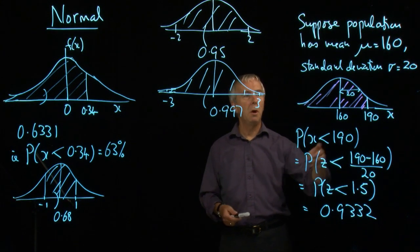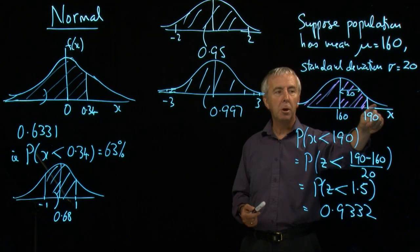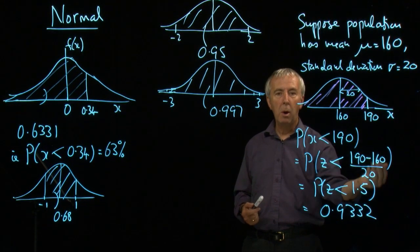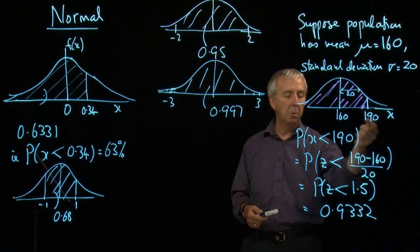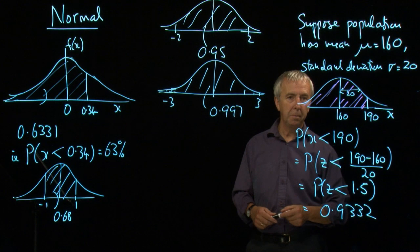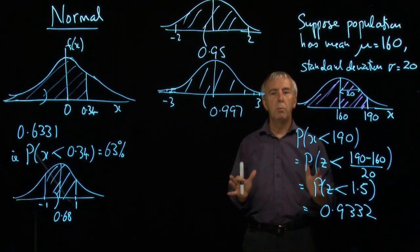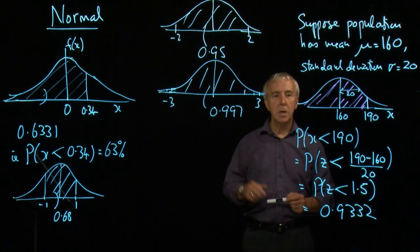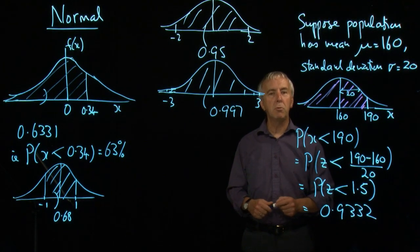And so if I wanted then the chance of being above 190, it would be 1 minus this, and that would be about 7%. We simply take this away from 1. That's how we work out normal probabilities from the table of the standard normal distribution.